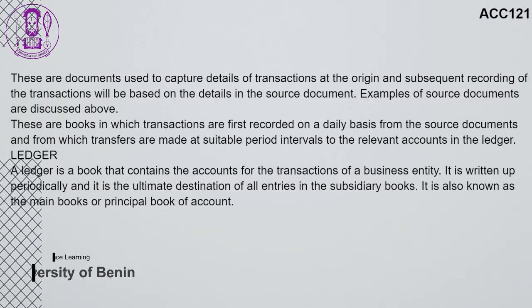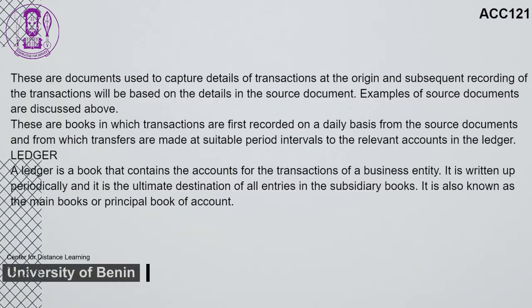Source documents are used to capture details of transactions at the origin, and subsequent recording of transactions will be based on the details in the source document. Books of original entry are books in which transactions are first recorded on a daily basis from source documents, and transfers are made at suitable period intervals to the relevant accounts in the ledger. A ledger is a book that contains the accounts for the transactions of a business entity, written up periodically, and it is the ultimate destination of all entries in the subsidiary books.